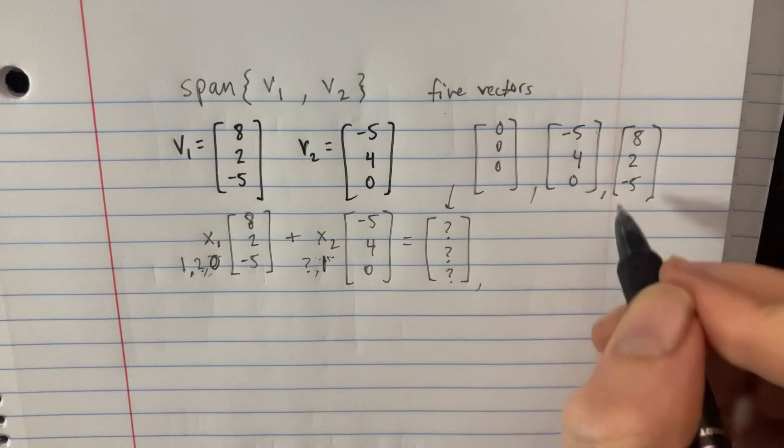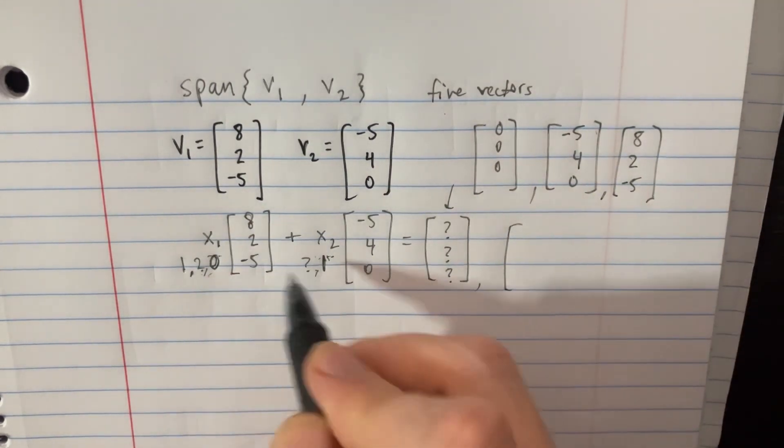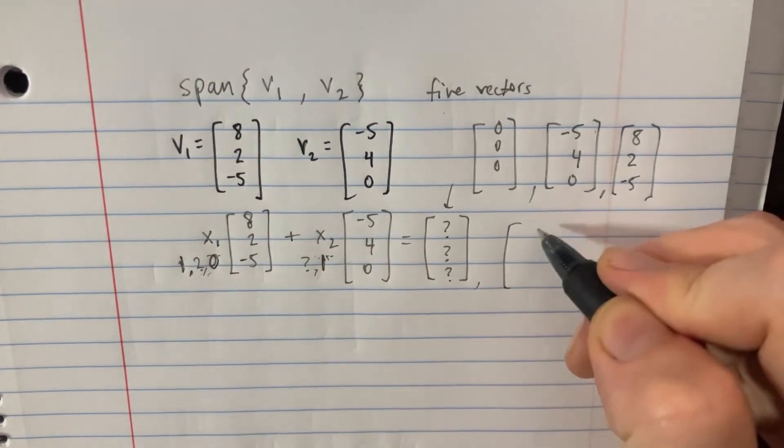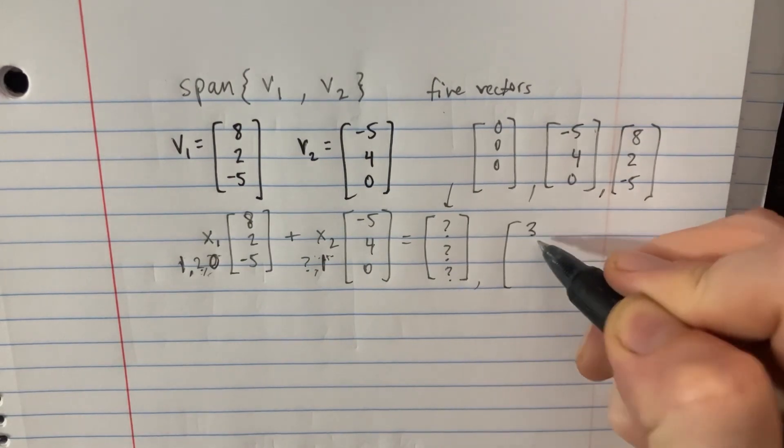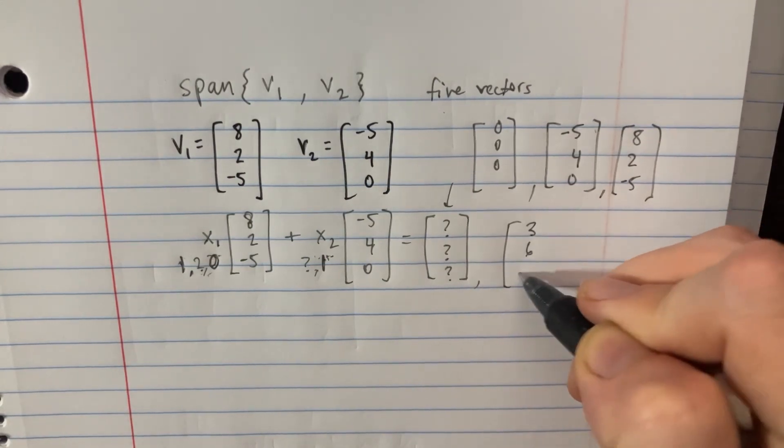So we've already got three out of the five vectors. Let's get two more. If we have one and one, then we can add them together. So let's go ahead and do that. We would get 3, and then 6, and then negative 5.